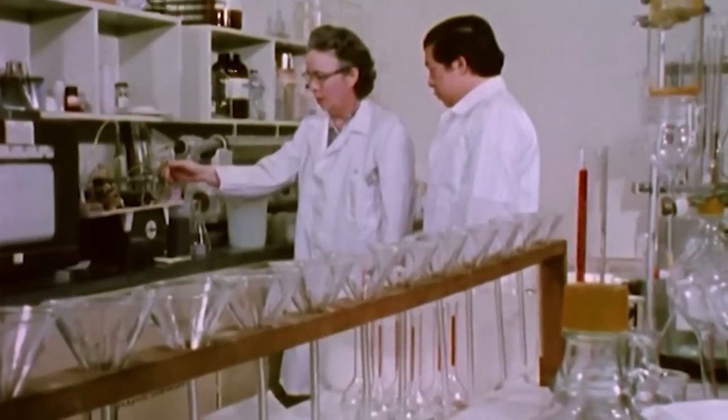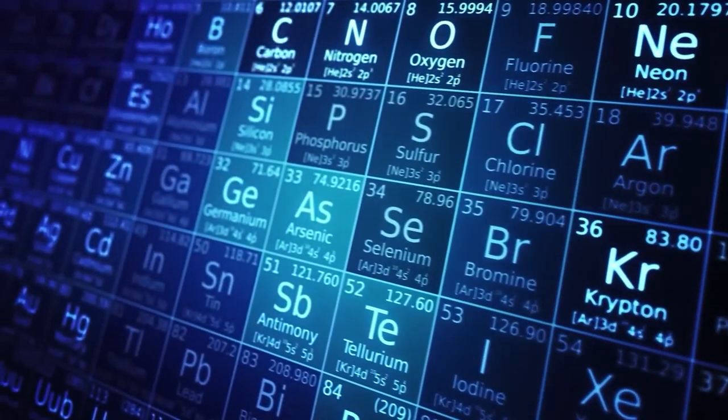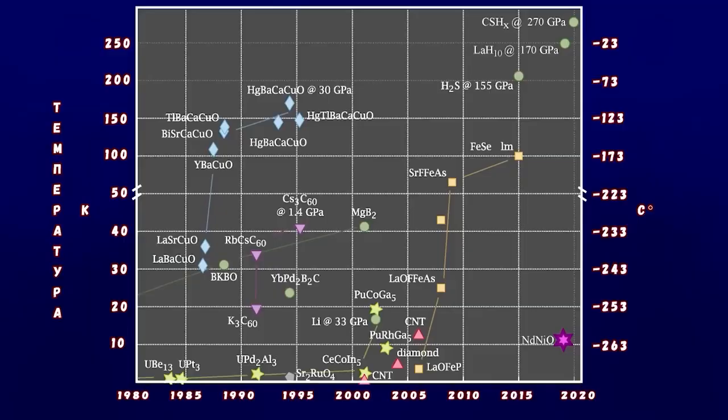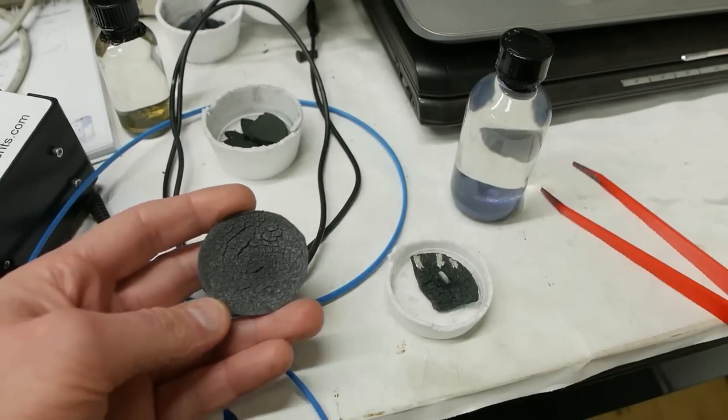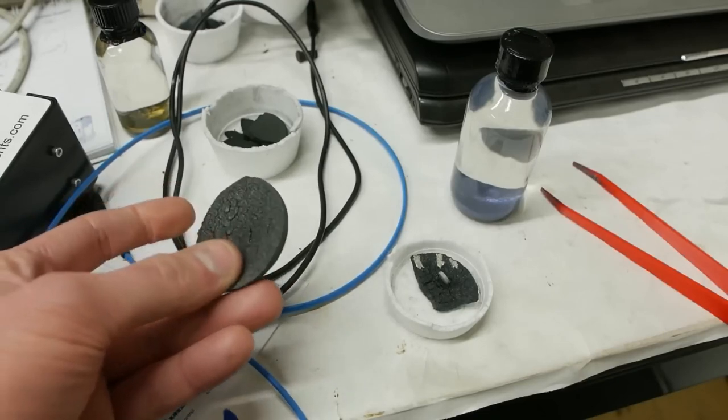However, in the 1980s, materials with superconductivity at much higher temperatures were discovered. These included compounds with substantial resistance under normal conditions, such as copper oxides, also known as cuprates, or magnesium diboride, which becomes a superconductor at 39 Kelvin or minus 234 degrees Celsius.